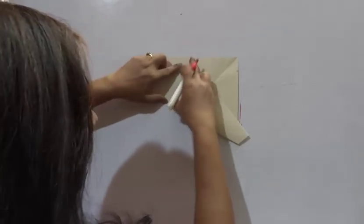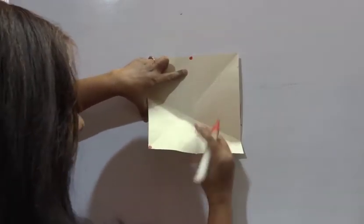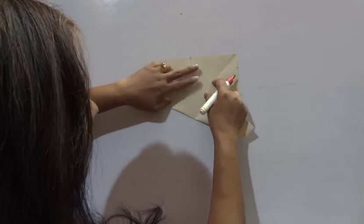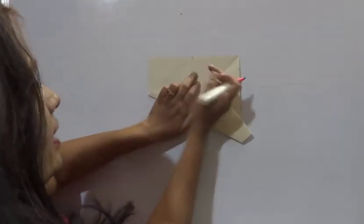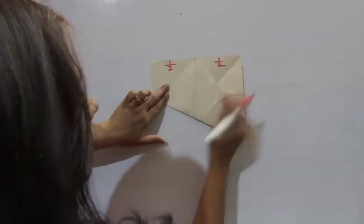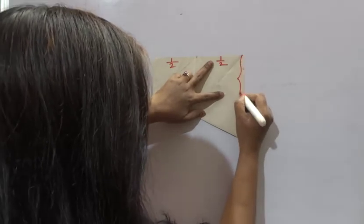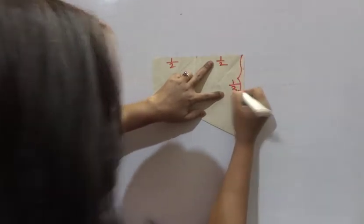Where we have already divided this paper into two parts. So this part, like this. Now this part is half, we know that. Now this length from here to here, this is one third.